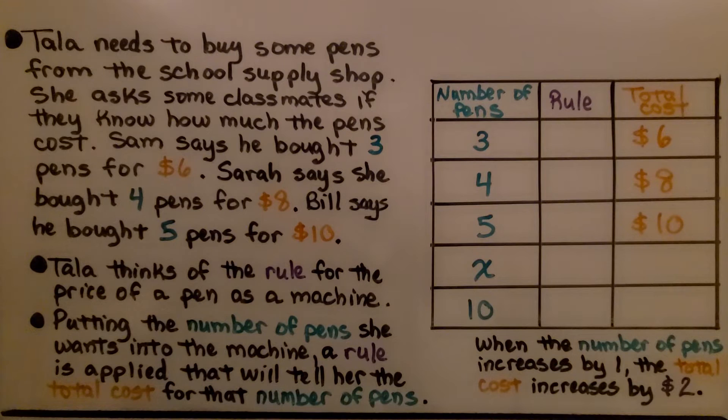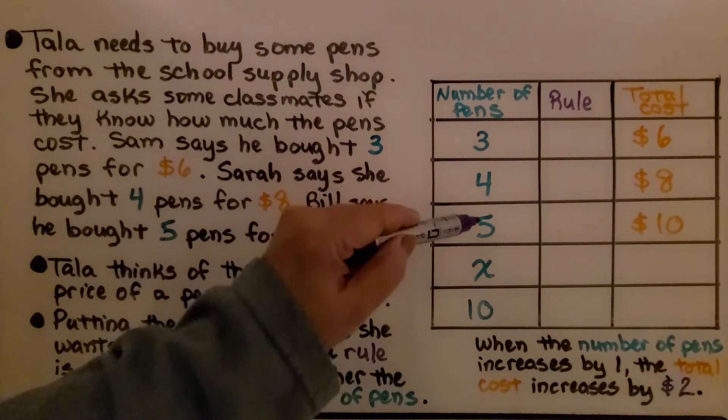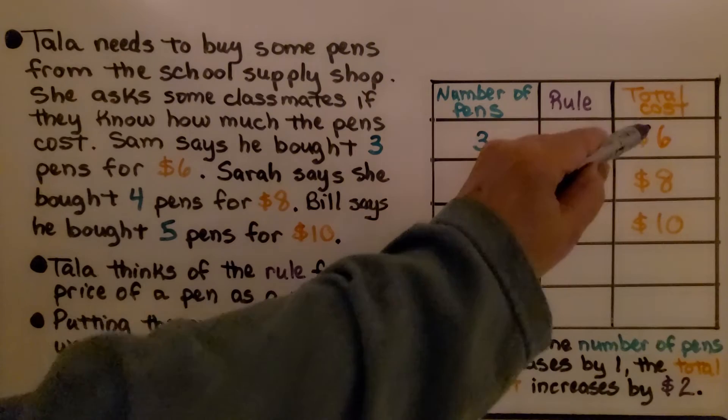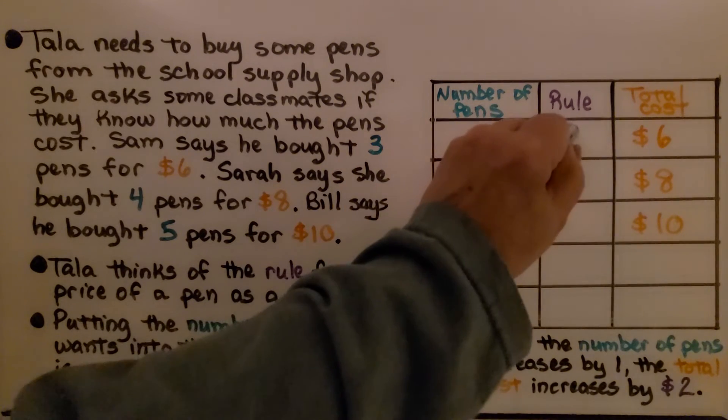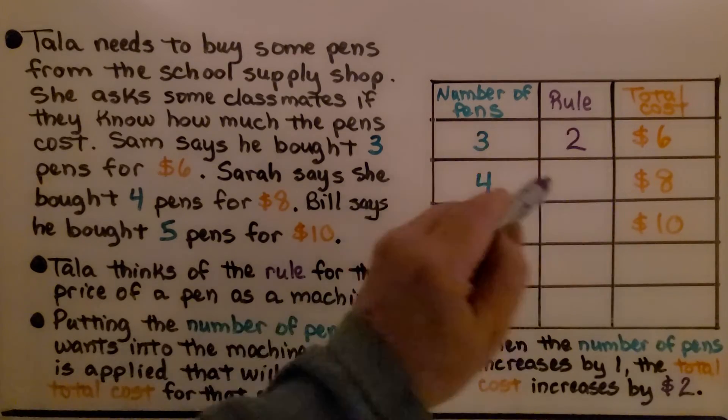Tala thinks of the rule for the price of a pen as a machine. Putting the number of pens she wants into the machine, a rule is applied that will tell her the total cost for that number of pens. We see as the number of pens goes up by 1, the total cost goes up by 2. The rule must be to multiply by 2.